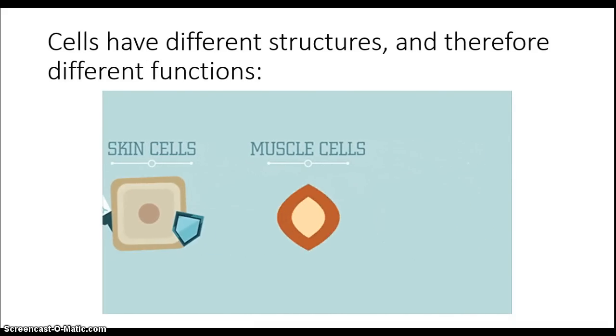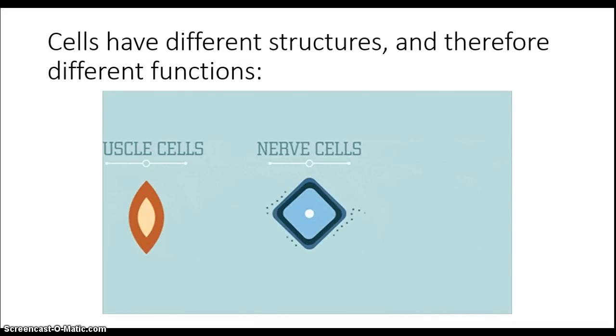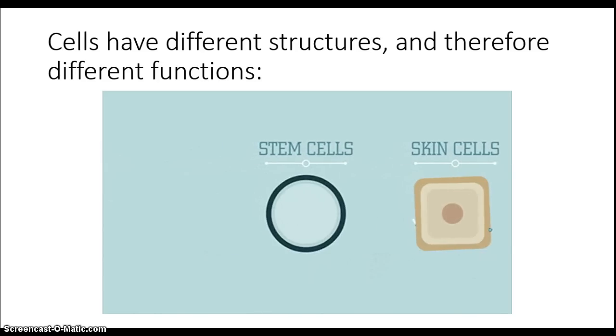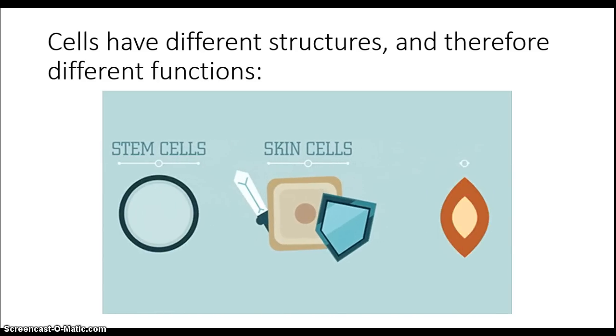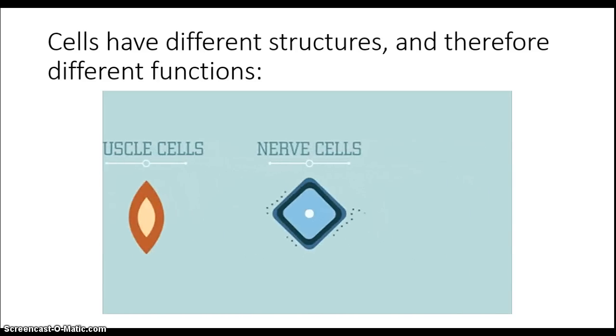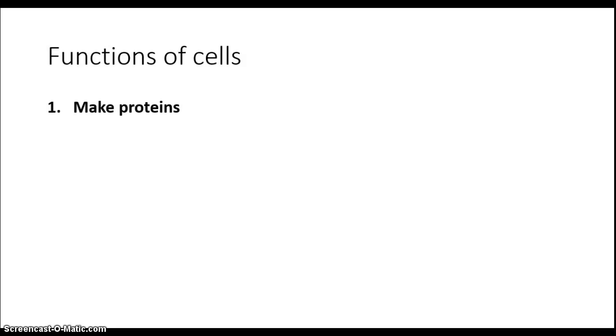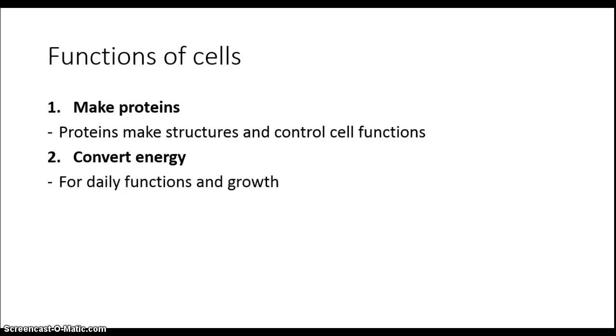Due to their different internal structures, different cells have a variety of different functions in your body. Different organelles give these cells their different functions. The first function of cells is to make proteins. Proteins make up various structures and control every function in your cell. The second is to convert energy from one form to another, so you can use it for various functions as well as growth. The last is to make new cells by reproduction to allow you, a multicellular organism, to grow, to repair from injury, and to renew lost cells.